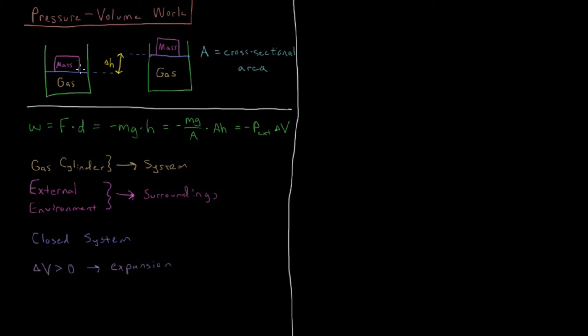And in the reverse case, you would have to do work to push this gas back further down into the cylinder. So for an expansion, if our system expands, it is doing work on the surroundings. And when we do work on the surroundings, that means that the work is less than zero, because work done on the system is defined as being a positive input of energy.